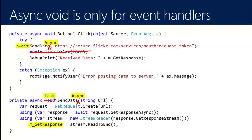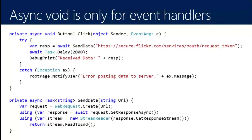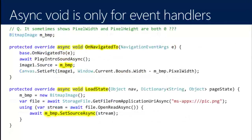The fix is to remove void, make it task, rename the method to send-data-async, and make sure you're awaiting it in button-one-click. Just using task doesn't mean you need a return value from the await. If you have a logical return value, change send-data to return task-of-string. Because we're attempting to get back a response, we should return it.